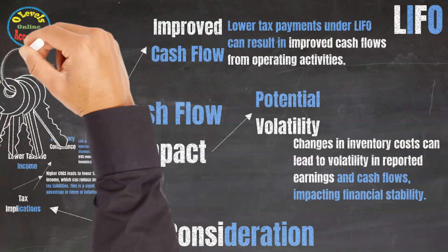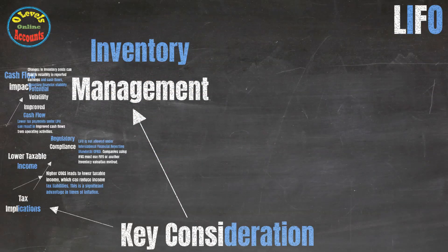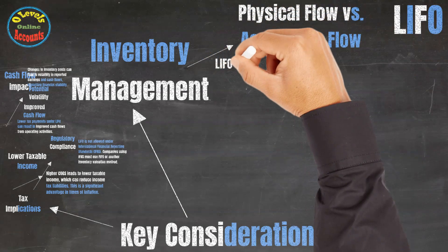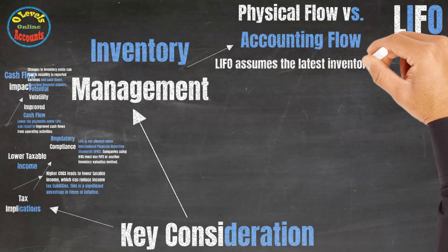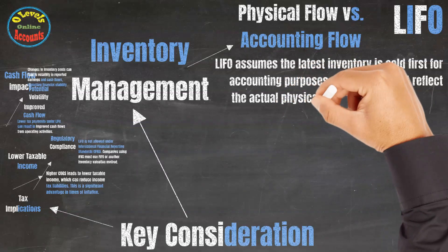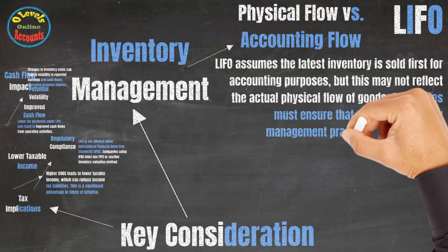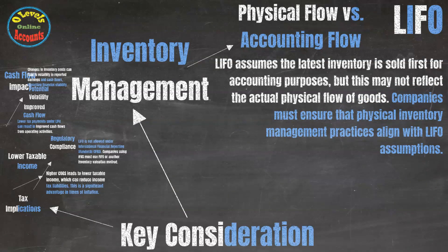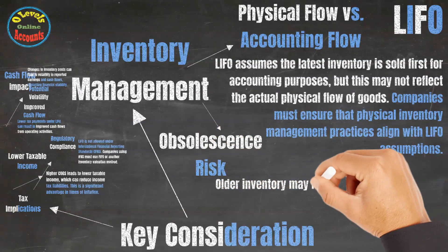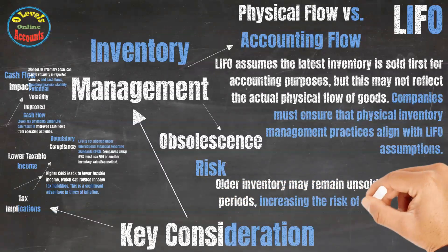The third key consideration is inventory management. First, physical flow versus accounting flow: LIFO assumes the latest inventory is sold first for accounting purposes, but this may not reflect the actual physical flow of goods. Companies must ensure that physical inventory management practices align with LIFO assumptions. Second, obsolescence risk: older inventory may remain unsold for extended periods, increasing the risk of obsolescence or spoilage.